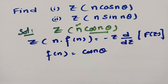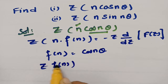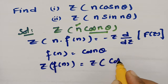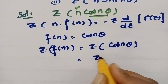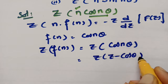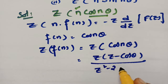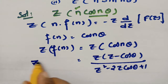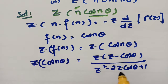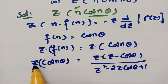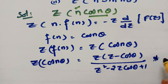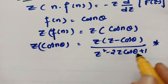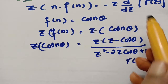f(n) is cos(nθ). Now I need the Z transform of f(n), which equals capital F(z). The Z transform of cos(nθ) is nothing but z(z − cosθ) divided by (z² − 2z·cosθ + 1). I made a video on this — please go through the playlist and watch it. According to our special functions, Z transform of cos(nθ) equals z(z − cosθ) / (z² − 2z·cosθ + 1). This is our capital F(z).